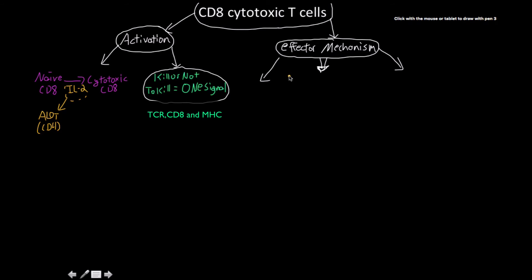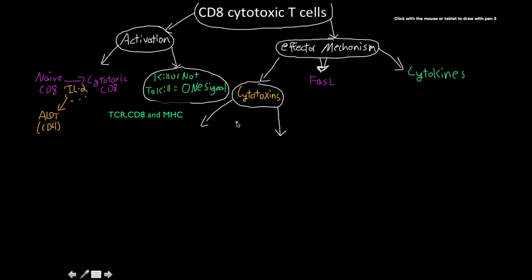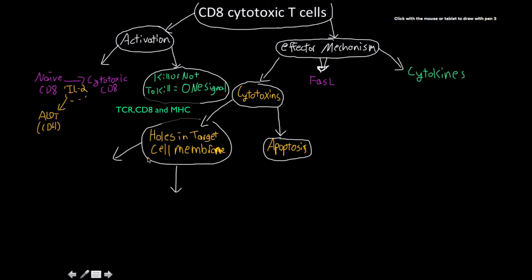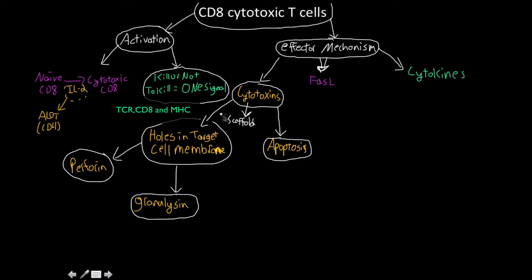There are three effector mechanisms: cytotoxins, cytokines, and the FAS ligand. For cytotoxins, some are involved in opening up the membrane — perforin and granulysin — and others induce apoptosis once inside. A scaffold protein called serglycin assists in the delivery of these cytotoxins. The apoptotic cytotoxins are known as granzymes.